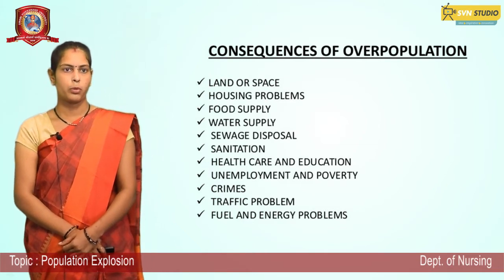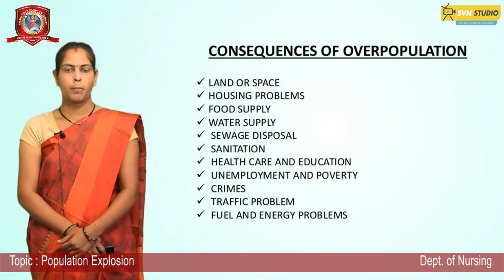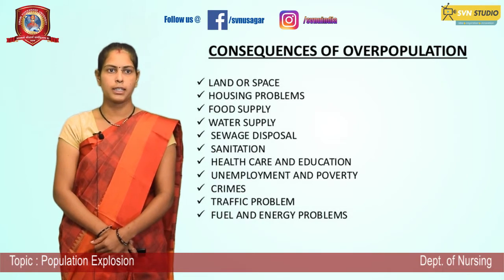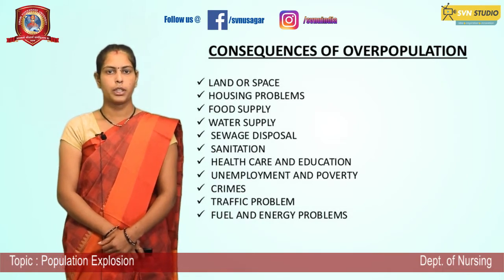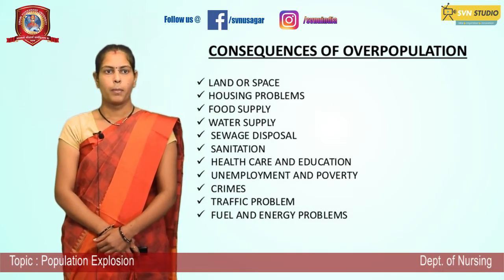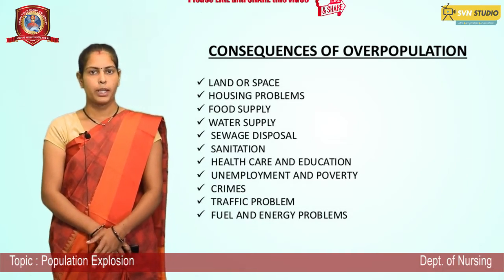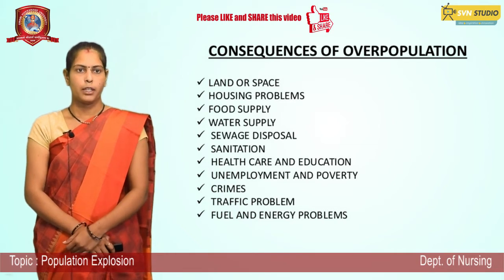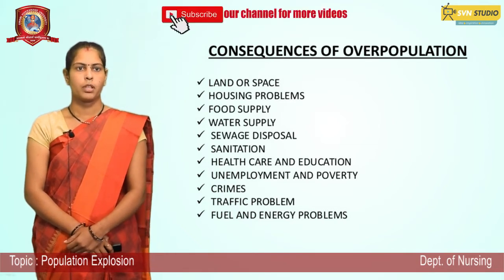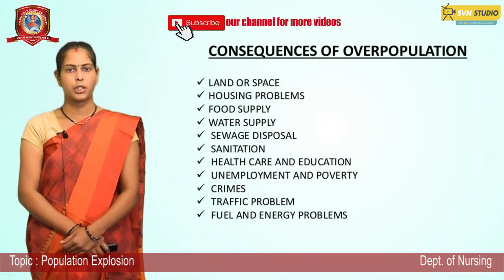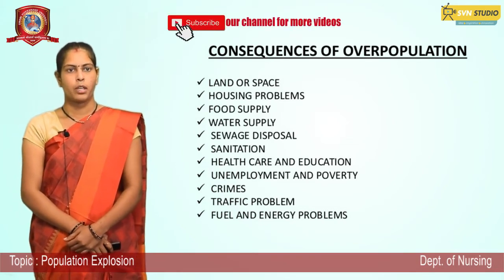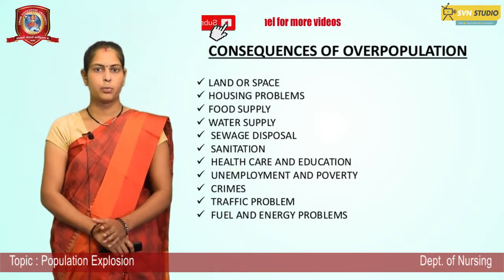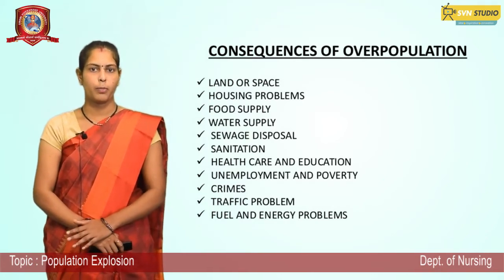Food supply and water supply are major consequences of overpopulation. Sea waste disposal is also affected — population is growing so much that sea waste disposal does not happen properly.